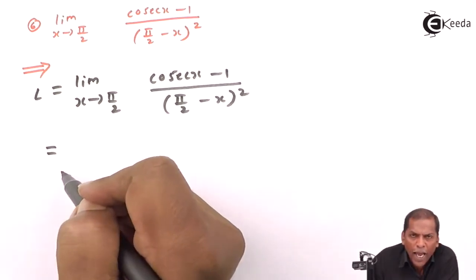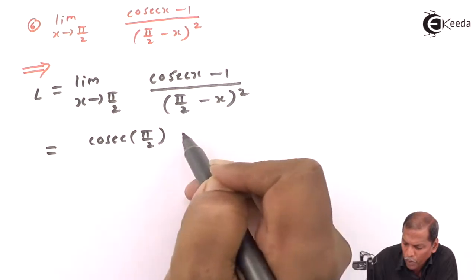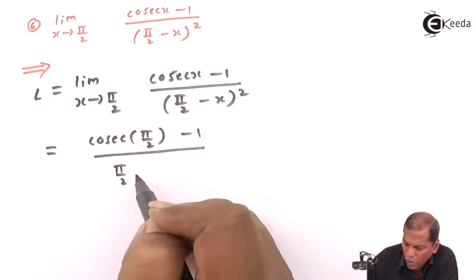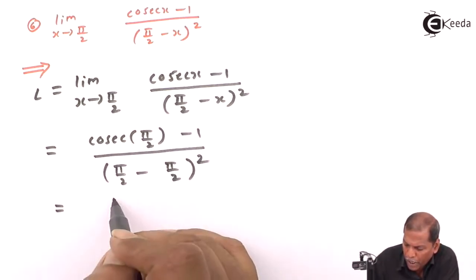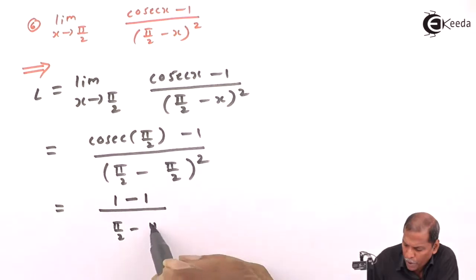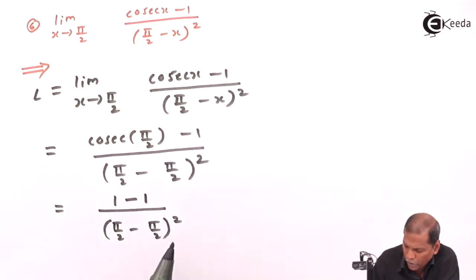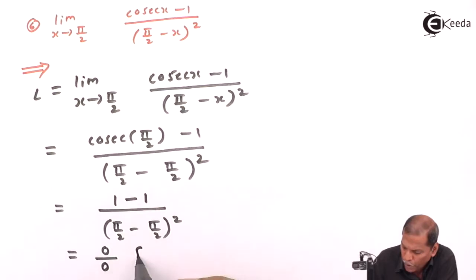Now we substitute the limit x equal to π/2. The next step gives cosec(π/2) - 1 in the numerator upon (π/2 - π/2) whole square in the denominator. Now cosec 90° gives 1, so we get 1 - 1 = 0 in the numerator and (π/2 - π/2)² = 0 in the denominator, which is of the form 0/0.